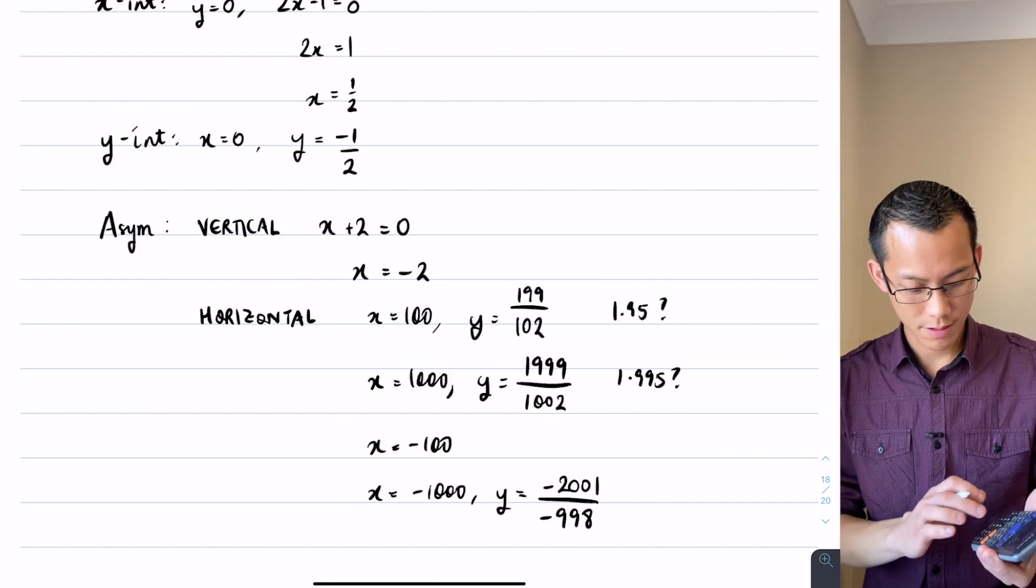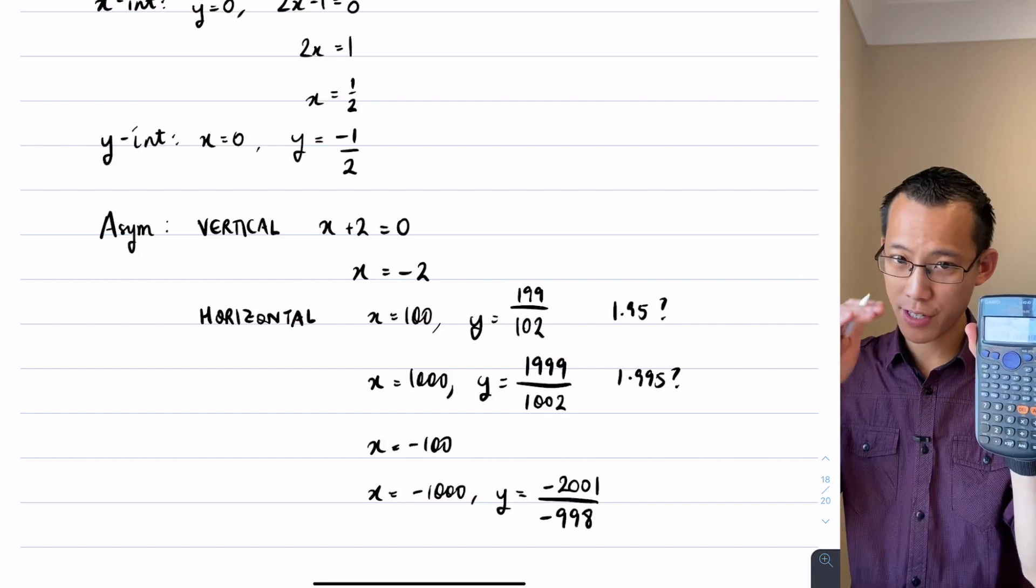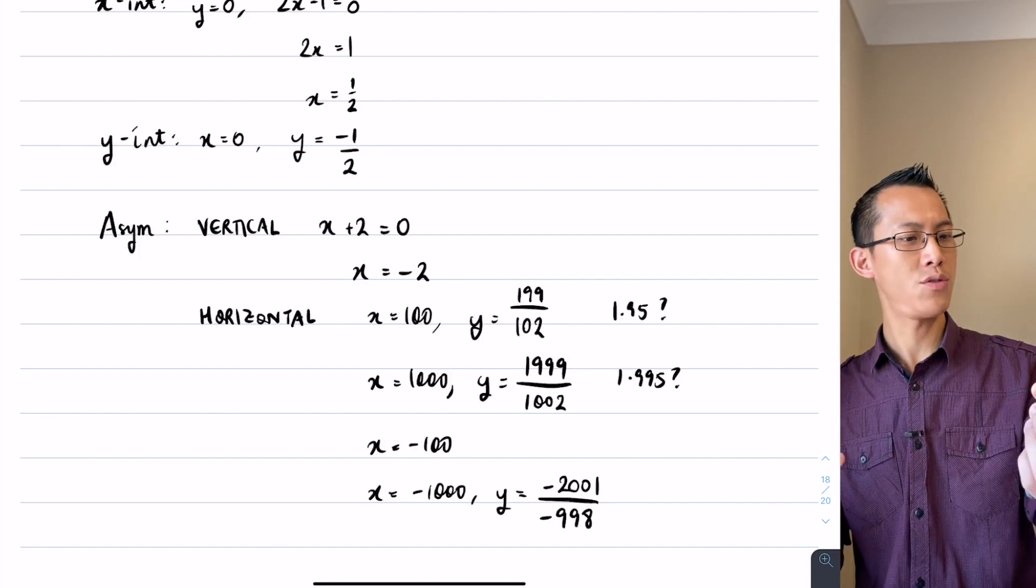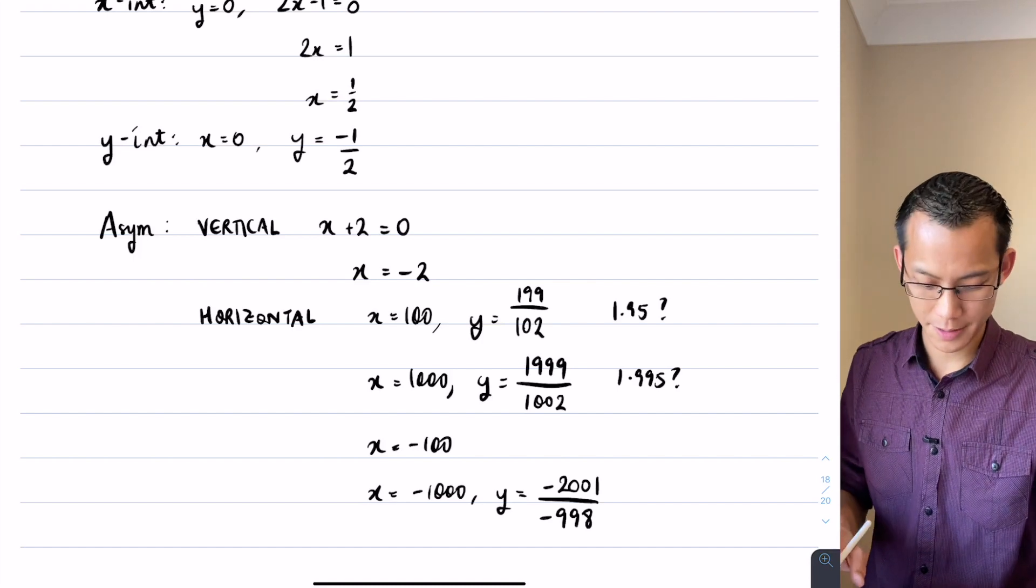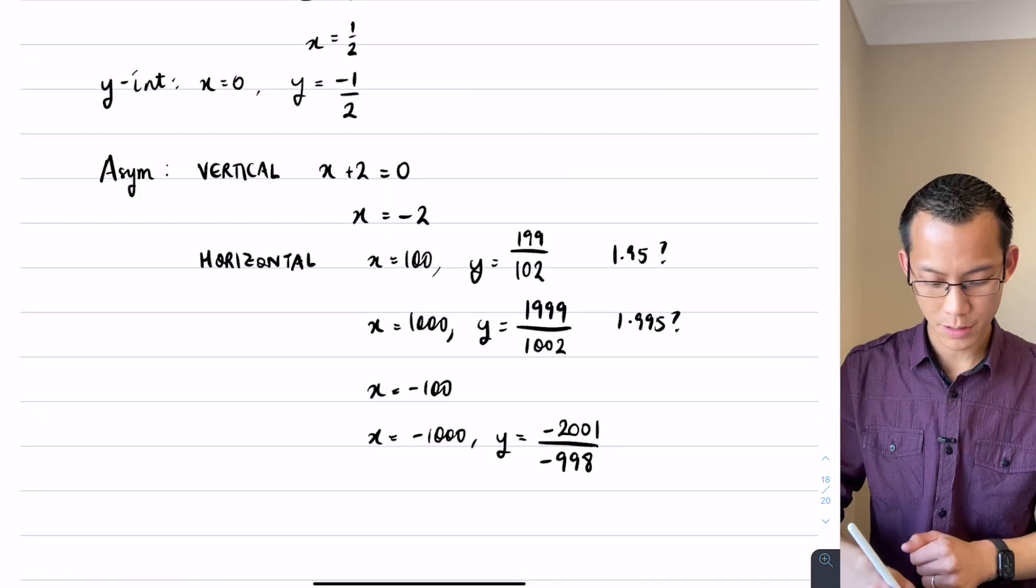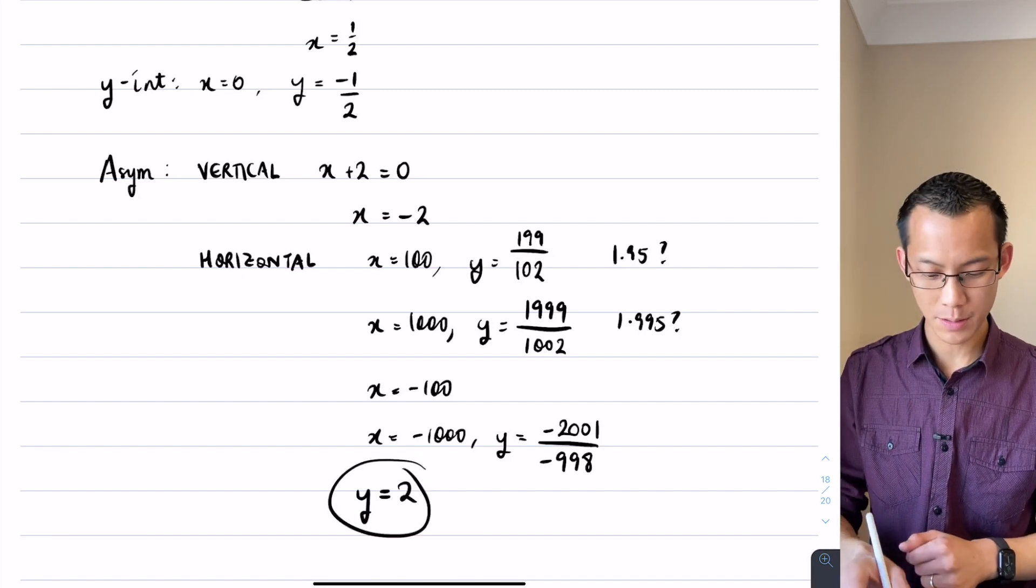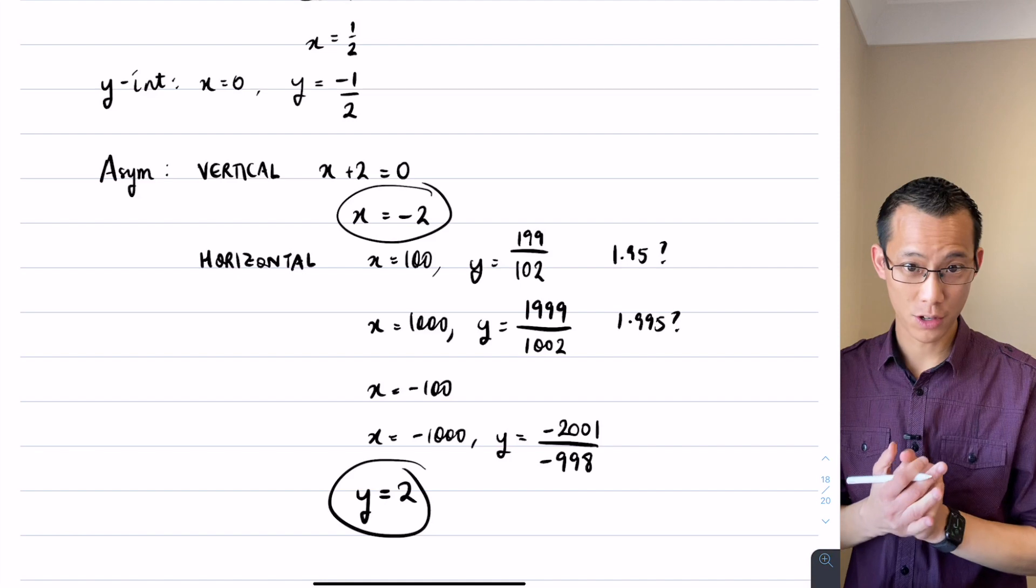You've got 2001 divided by 998, and sure enough you're just going to be slightly above 2. I've got 2.005 on my calculator. Okay, so therefore I'm concluding all of this by saying I have a horizontal asymptote at y equals 2. There's my horizontal asymptote. There's my vertical one.